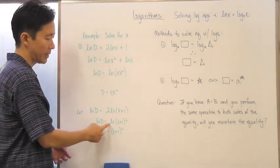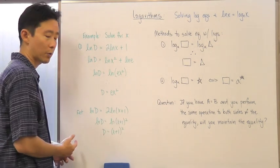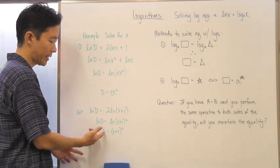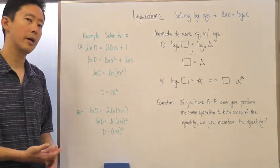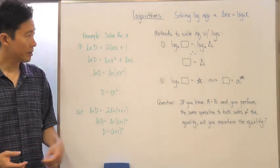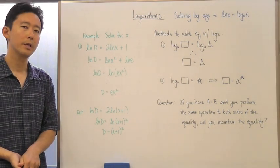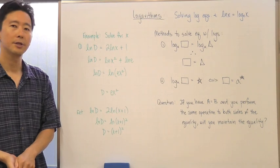And we just need to go ahead and say then that the natural log of d is equal to the natural log of the quantity x plus 1 squared. Okay, and if that's the case, then we know for a fact that d has to be equal to x plus 1 quantity squared. Again, you use your algebraic rules to solve for x. So there you go, that's how we go ahead and solve logarithmic equations using either method 1 or method 2.